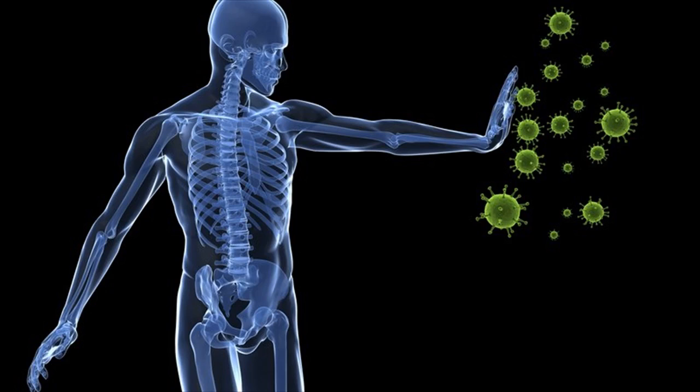Difference between innate immunity and acquired immunity. Innate immunity and acquired immunity are two important and different segments of the immune system that act together to defend a body against infection and disease.